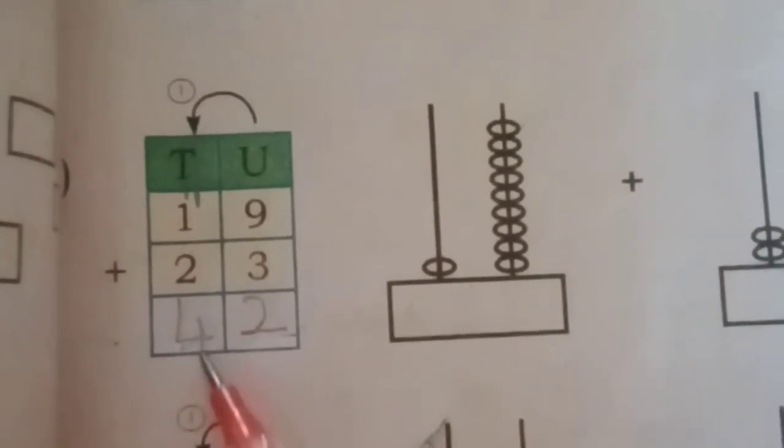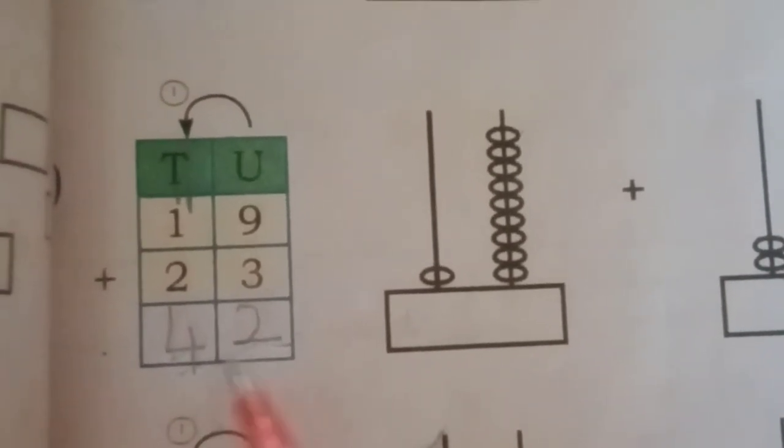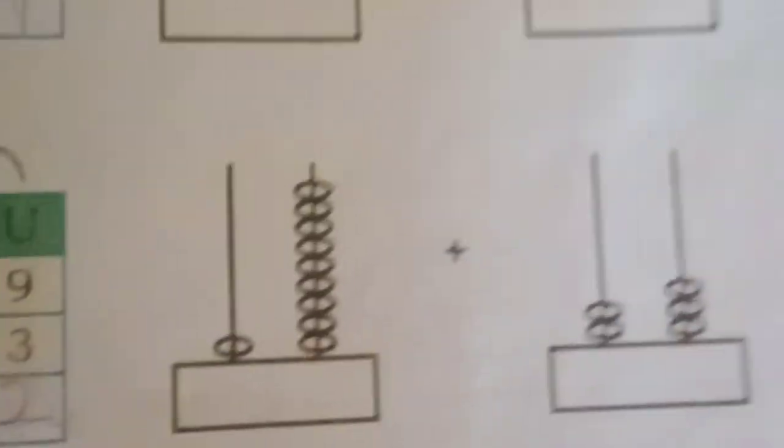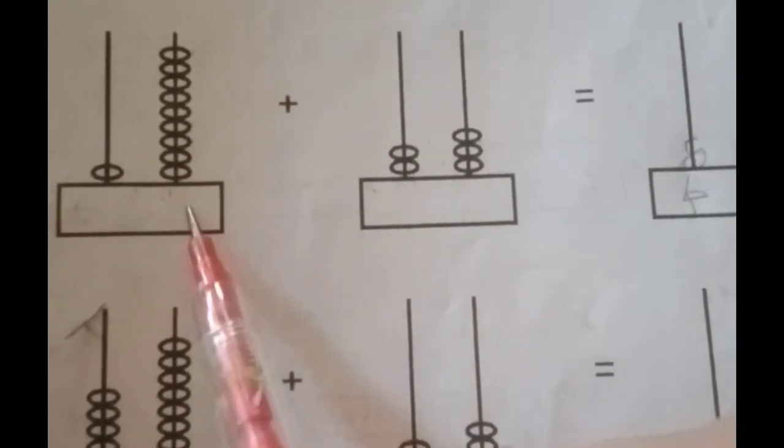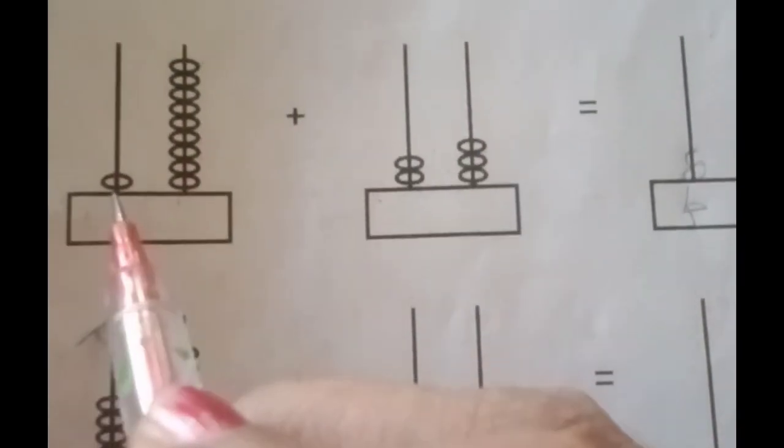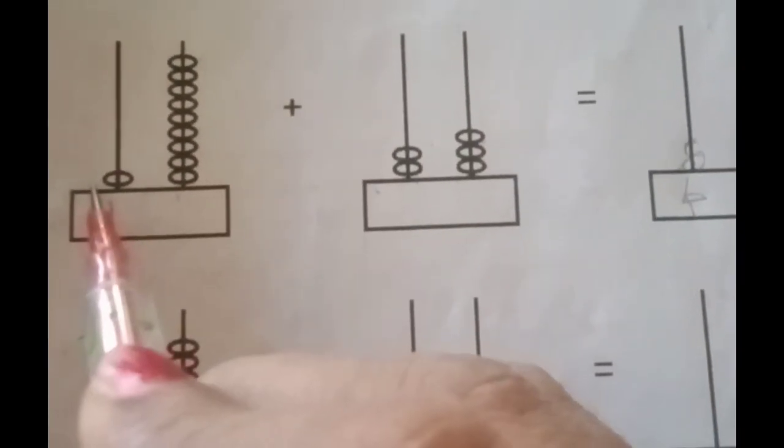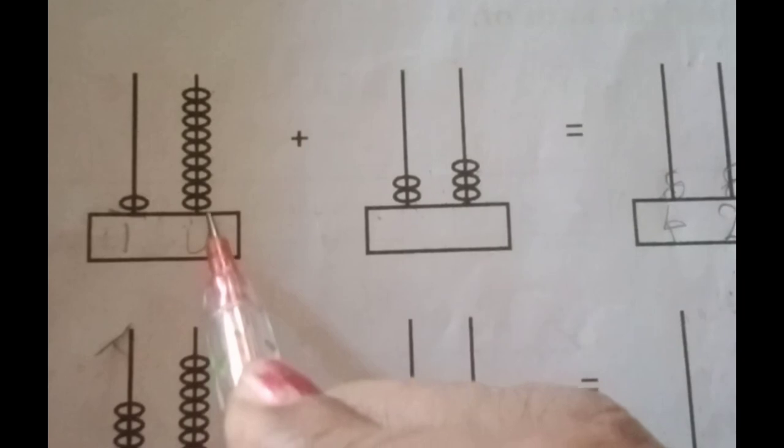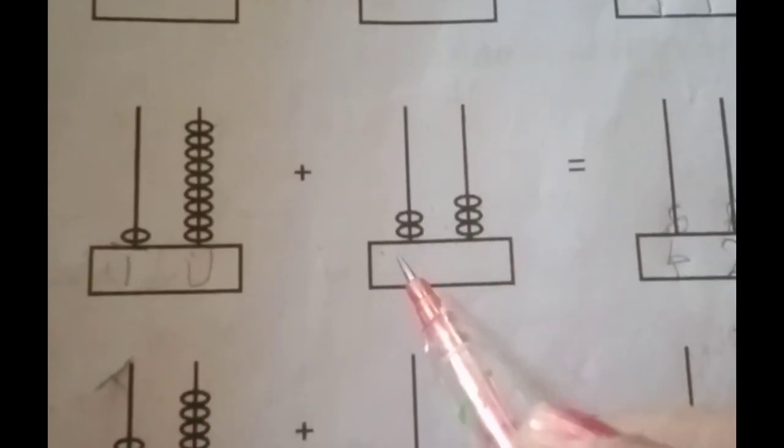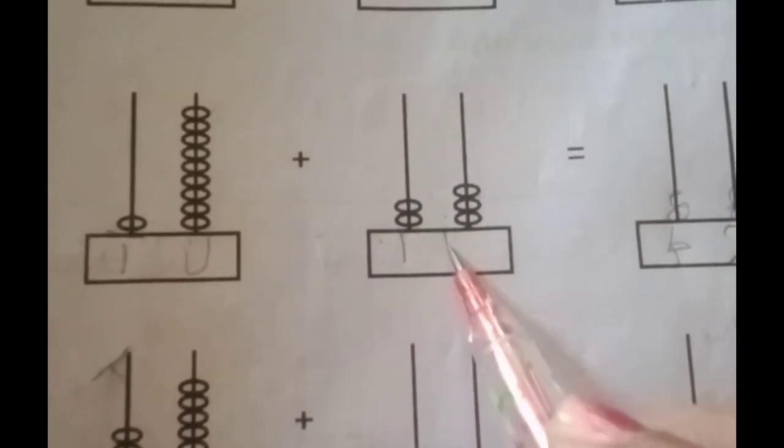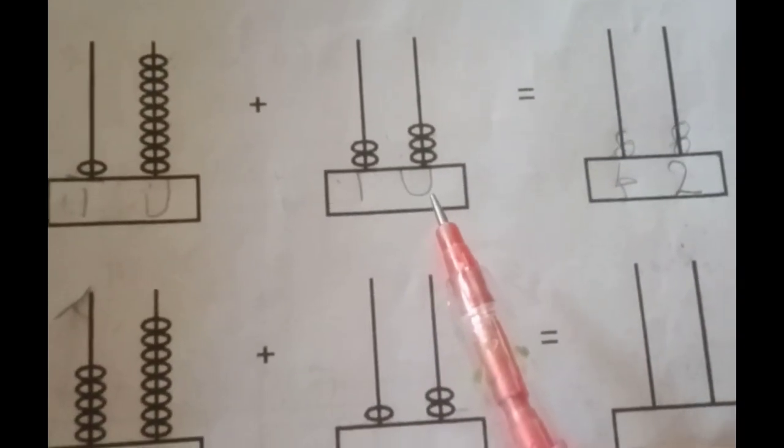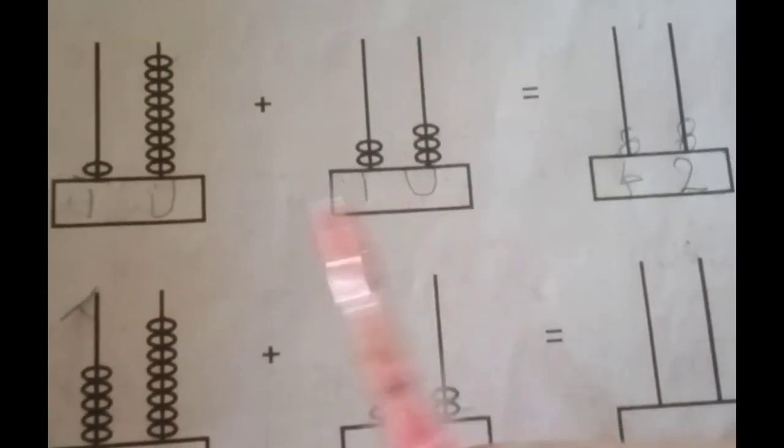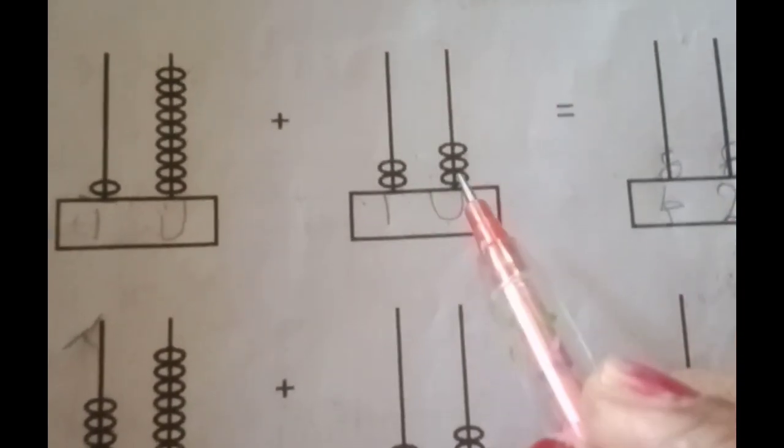So the answer is 42. Now in abacus we have to add these 2. This is 10th and this is units. This is 10th and this is unit. Now first we have to add unit. So how many are there?